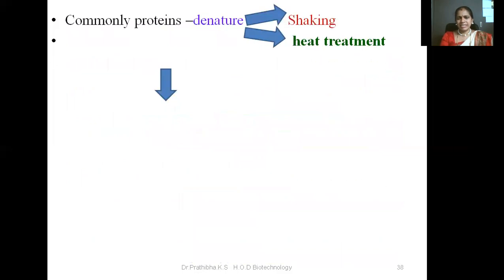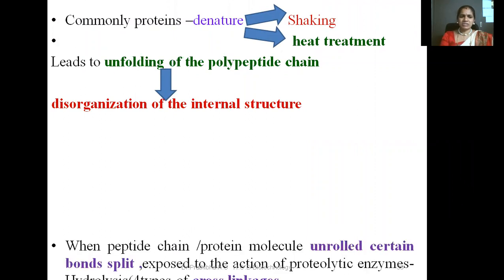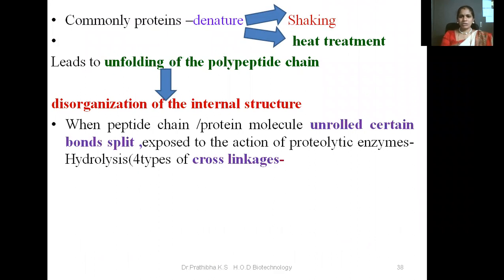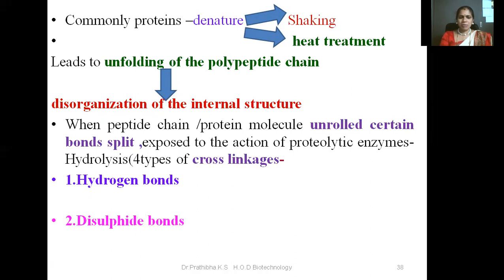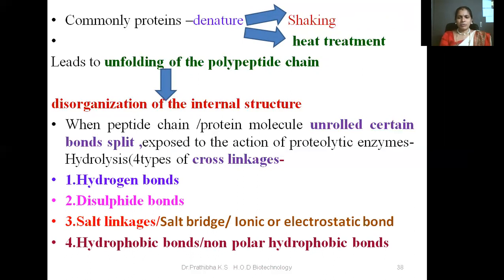Commonly, proteins get denatured upon shaking and heat treatment, which leads to unfolding of the polypeptide chain, responsible for disorganization of the internal structure of the proteins. When peptide chains or protein molecules are unrolled, certain bonds split and are exposed to the action of proteolytic enzymes, which brings about hydrolysis and is responsible for disruption of the four types of cross-linkages present in proteins: hydrogen bonds, disulfide bonds, salt linkages or salt bridges (ionic or electrostatic bonds), and hydrophobic bonds (non-polar hydrophobic bonds).